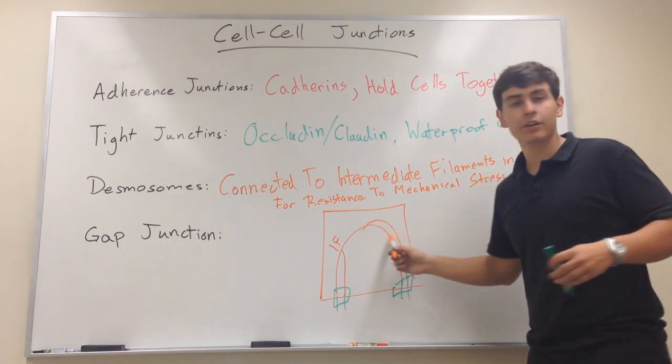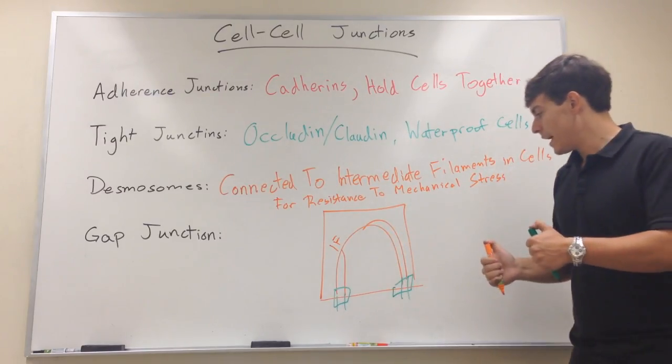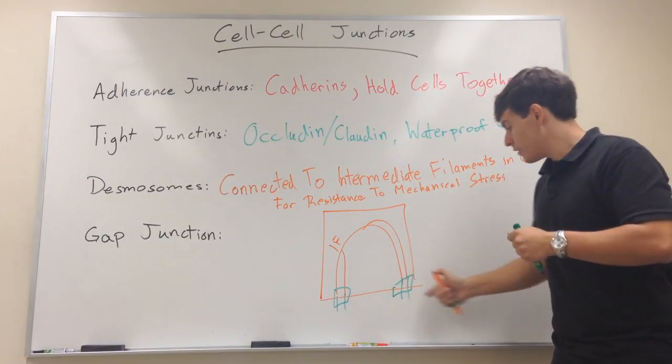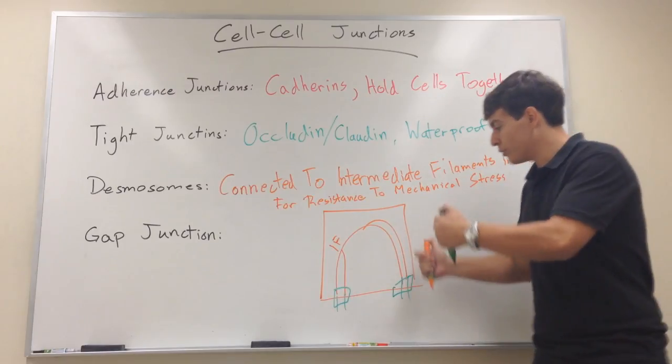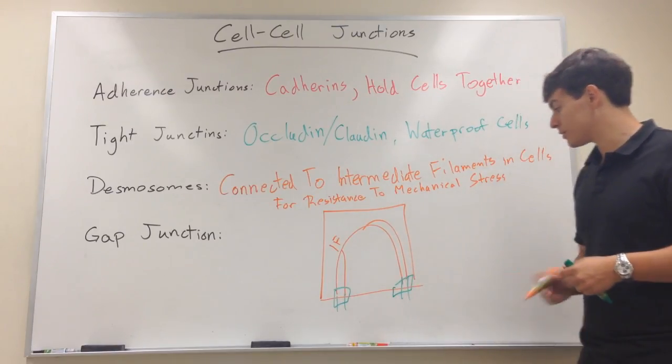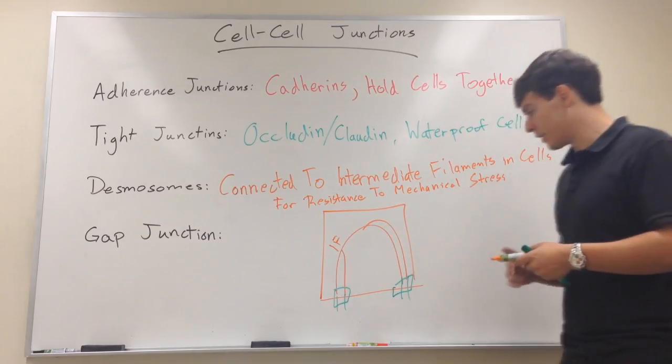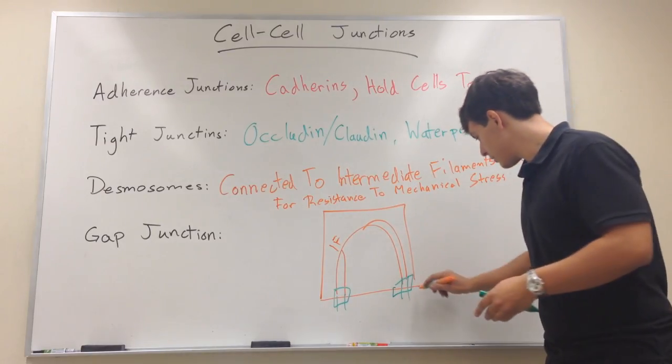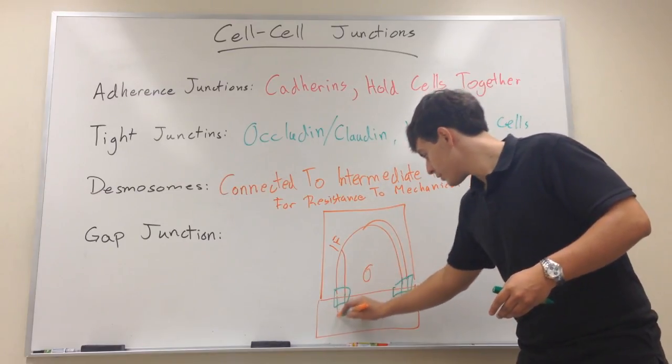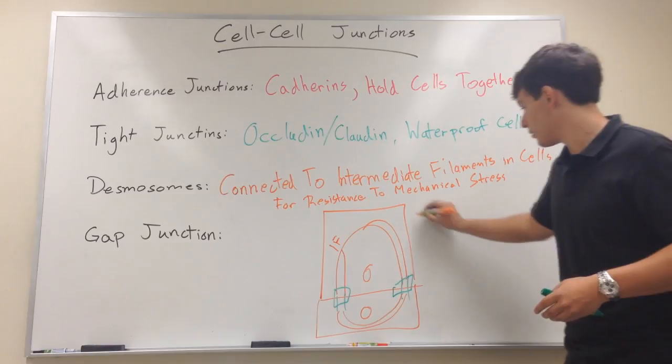So connected to intermediate filaments for resistance to mechanical stress. So it connects with the inner cytoskeleton of the cell and basically if the cell is moving a whole lot or getting pulled around, this desmosome will hold it stably in place with other cells so that they don't get jumped around. And so that's an important thing to note here. So this would be another cell.